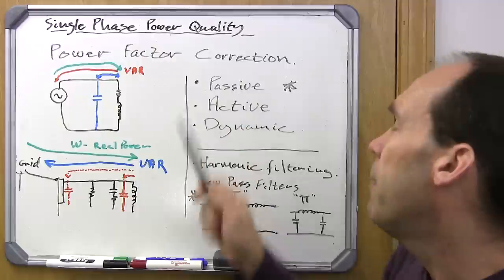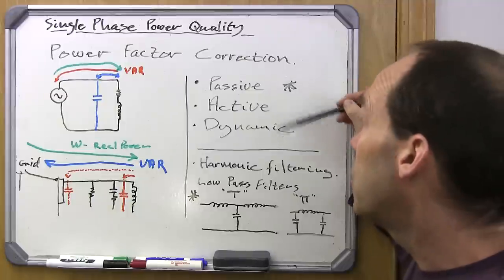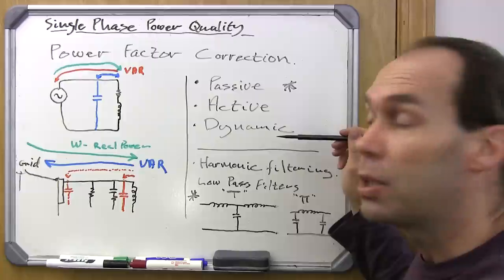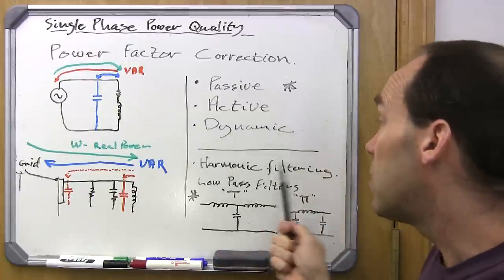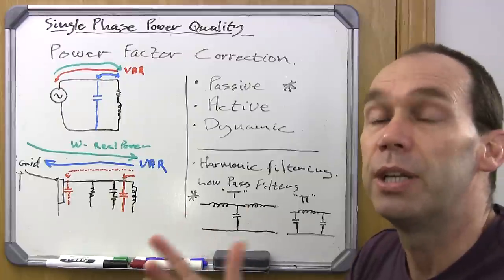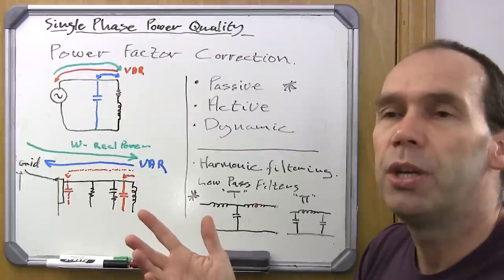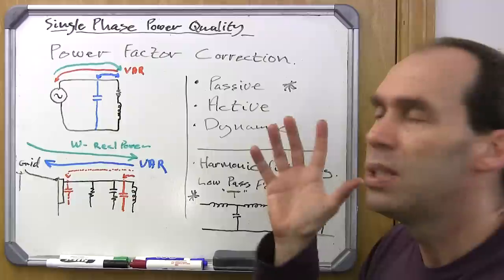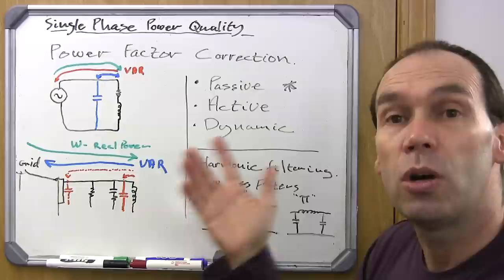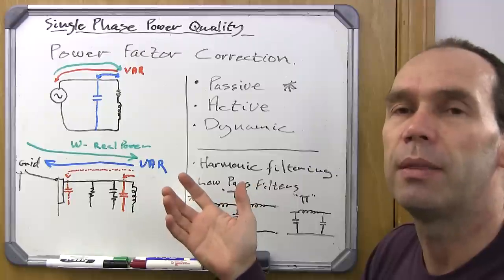When looking at power factor correction, you'll hear the terms passive power factor correction, active power factor correction, and dynamic power factor correction. We've also got harmonic filtering. This whole topic of power factor correction is a fine art. There are people in electrical engineering who specialize in this, especially for big industry where the costs from your electrical company can penalize you if you don't do something about it.